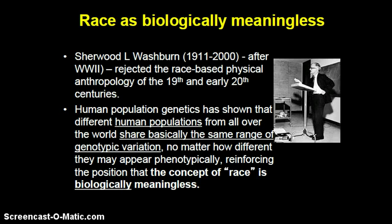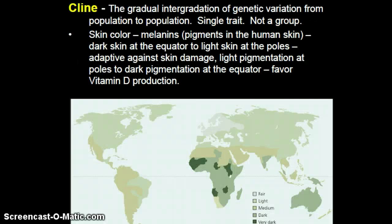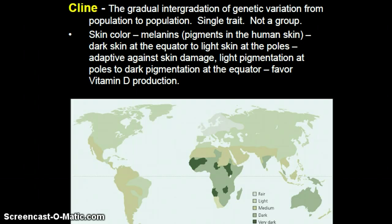If you remember from last time, we talked about the idea of phenotypic expression of the genotype. In terms of why race is biologically meaningless, the notion of the cline comes into play here. The cline is the gradual integration of genetic variation from population to population, but only along the lines of a single trait, not a group of traits. Where we see the concept of race today in the United States in terms of skin color, skin color is based on melanins or pigments of the skin, where you have darker skin at the equator to lighter skin at the poles.